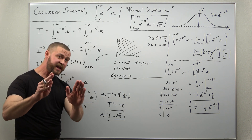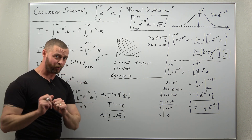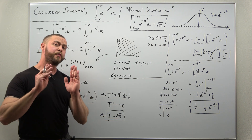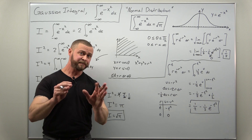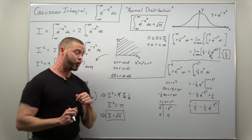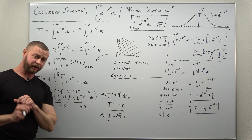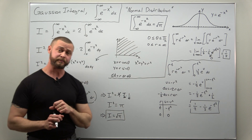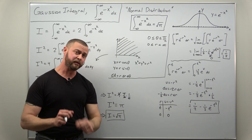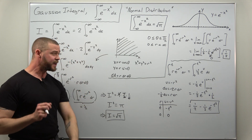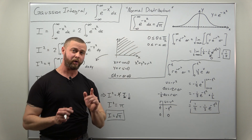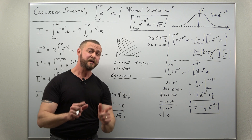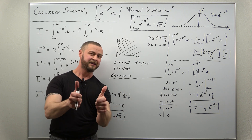This is the standard, least difficult way to arrive at the value square root of pi for the Gaussian integral. There are other ways, but this is the simplest, only really requiring a little knowledge of double integrals and evaluating double integrals in polar coordinates. In future videos we may look at some more advanced ways to arrive at this result. Hope you enjoyed the video — if you did, please support the channel by liking and subscribing.